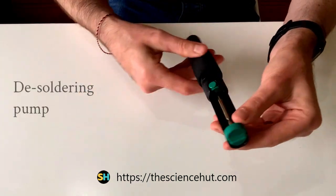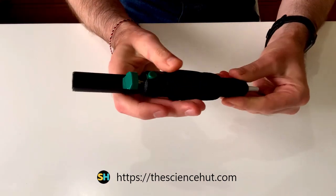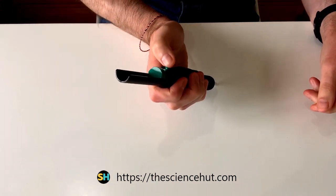A de-soldering pump which enables you to remove solder. You depress the plunger, melt the solder you wish to remove, then press the button which causes the piston to quickly retract and this sucks up the unwanted solder.